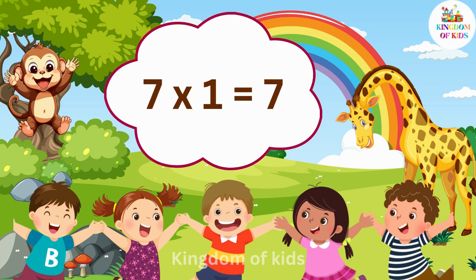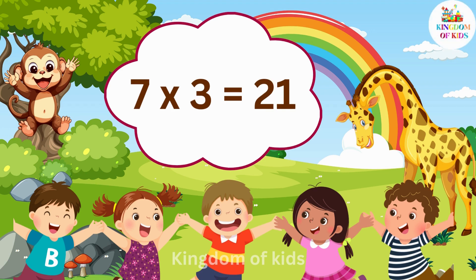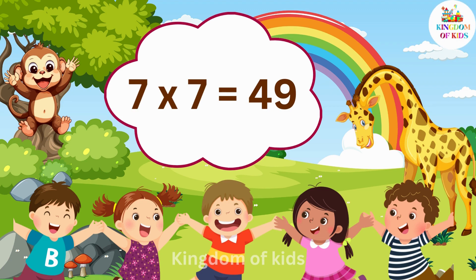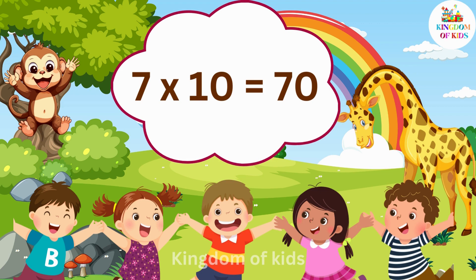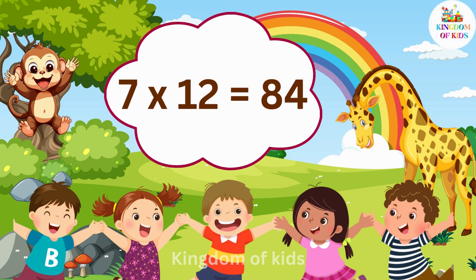7 1's are 7. 7 2's are 14. Seven threes are twenty-one. Seven fours are twenty-eight. Seven fives are thirty-five. Seven sixes are forty-two. Seven sevens are forty-nine. Seven eights are fifty-six. Seven nines are sixty-three. Seven tens are seventy. Seven elevens are seventy-seven. Seven twelves are eighty-four.